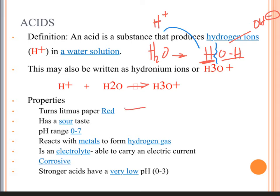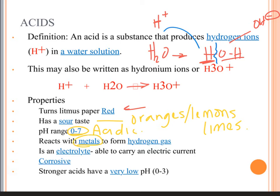What are some properties of acids? It turns litmus paper red — if you ever do chemistry, you'll actually make your own pH paper using cabbage. Acids are thought to have a sour taste — think oranges, lemons, limes. Anything from zero to seven is going to be considered acidic, and acids react with metals to form hydrogen gas, H2. It's also an electrolyte — meaning it's able to carry an electric current when dissolved into solution.